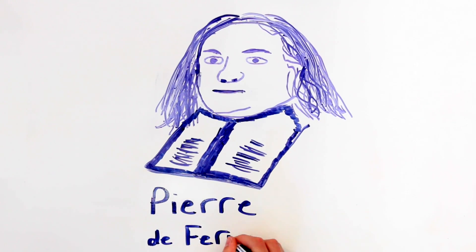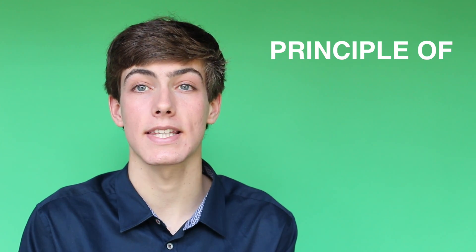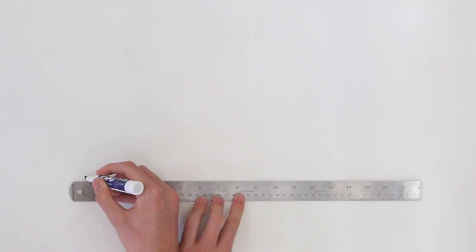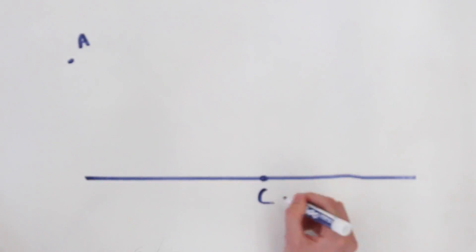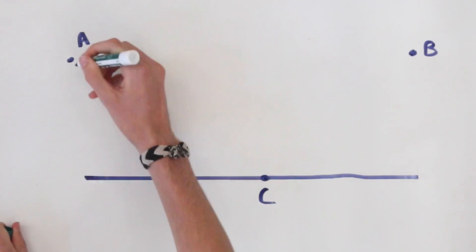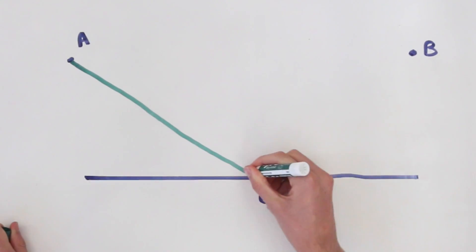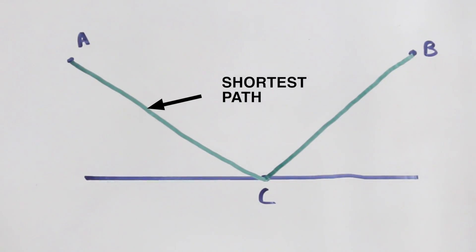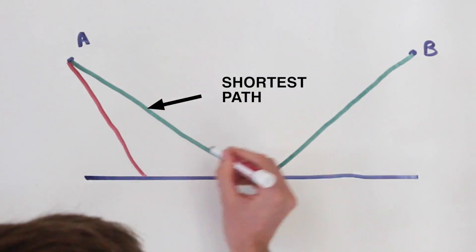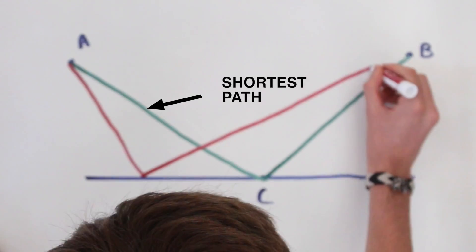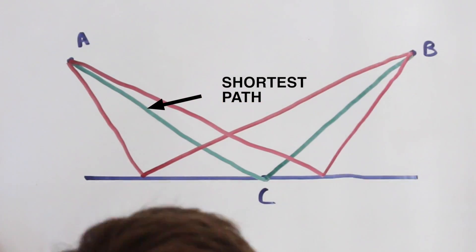Another 17th century physicist, Pierre de Fermat, observed that the path taken between two points by a ray of light is the path that can be traversed in the least time. This explains reflection in a different way. A beam of light going from A to B will travel the shortest path by way of point C. All other possible paths make for a longer journey, violating Fermat's principle of least time.